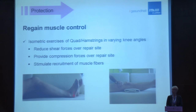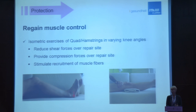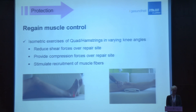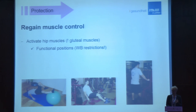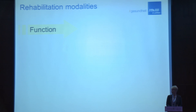Regaining muscle control is also important in the first phase, with the focus on stimulating recruitment of muscle fibers. Start with isometric exercises of the quadriceps and hamstrings in varying knee angles, being aware to reduce shear forces while providing compressive forces over the repair site. It is also very important to activate the hip muscles, as they play a major role in lower limb alignment. Take care of weight-bearing restrictions when performing these exercises.